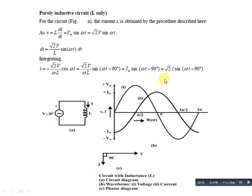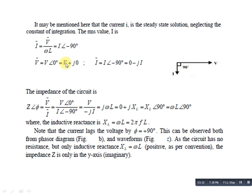यह हमारा phasor diagram है — इसमें current 90° से lag कर रहा है। Derivation में clearly दिख रहा है कि current 90° से lag कर रहा है। यहाँ Ī (IRMS) = V̄/(ωL), क्योंकि ωL = XL (inductive reactance)। तो angle के अंदर minus 90° है, क्योंकि current का angle voltage से minus 90° lag कर रहा है — phasor diagram में भी यही proof हुआ है।